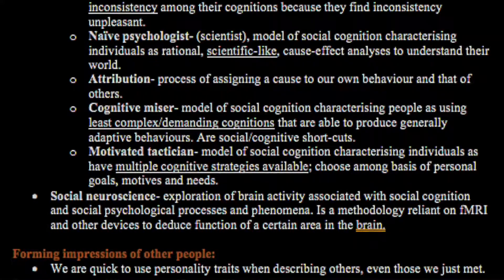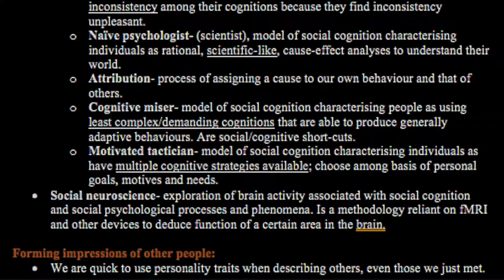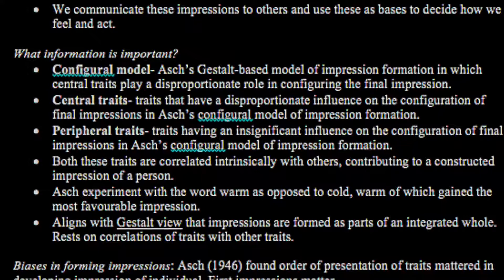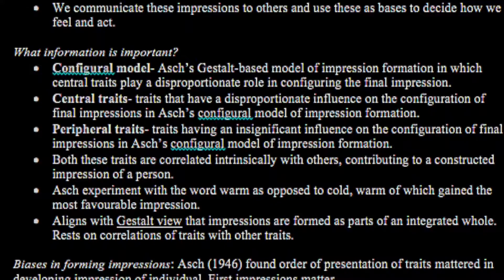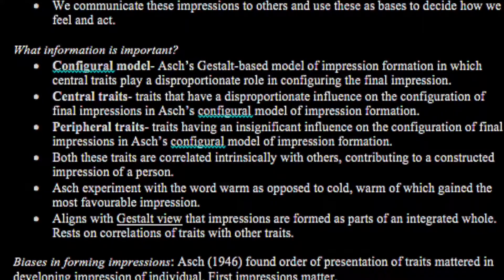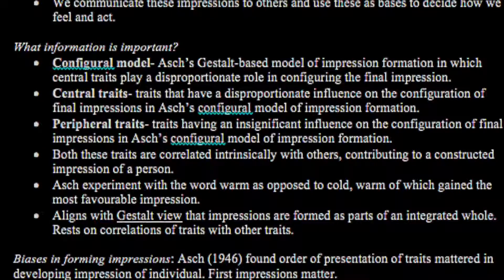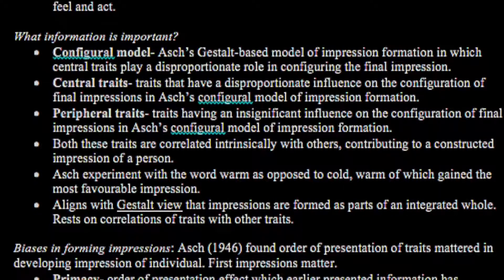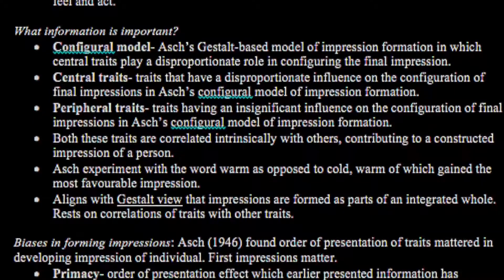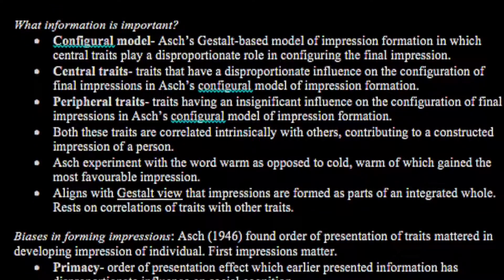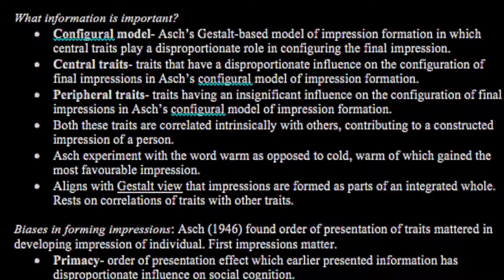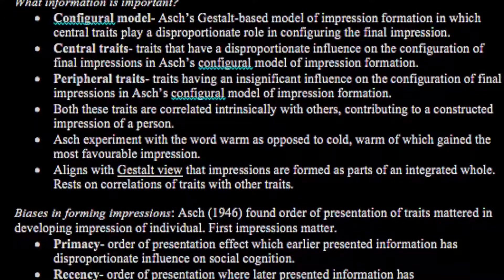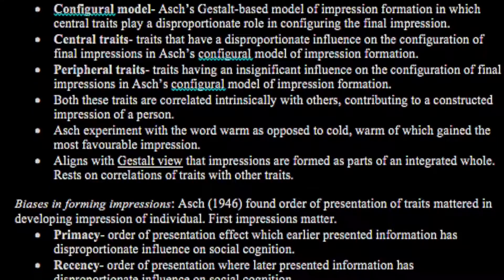Forming impressions of other people: we are quick to use personal traits when describing others, even those we just met. We communicate these impressions to others and use them as the basis of deciding how we feel and act. The configural model was proposed by Asch — a Gestalt-based model of impression formation in which central traits play a disproportionate role in configuring the final impression. Central traits are the traits that have disproportionate influence in the configuration of the final impression. Peripheral traits have an insignificant influence on the configuration of final impressions in Asch's configural model.